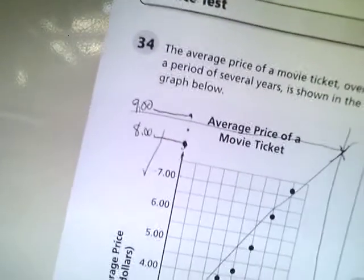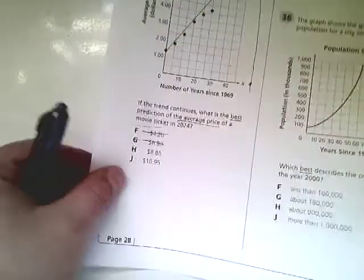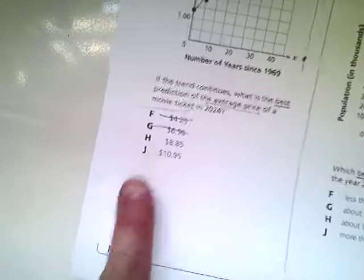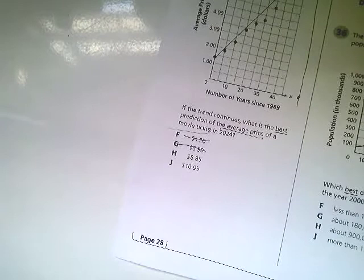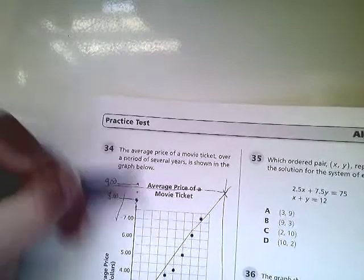So I'm going to legitimately say that the answer choices left, 10.95 and 8.95. 8.95 is a much more reasonable answer. 10.95 is way too much. That would be somewhere way up here. But our graph doesn't seem to indicate that that's the case. So for the answer for number 34 on the practice test, I'm going to pick H, $8.85.